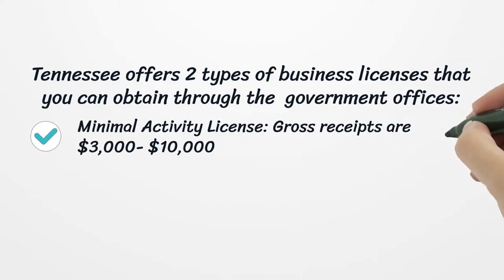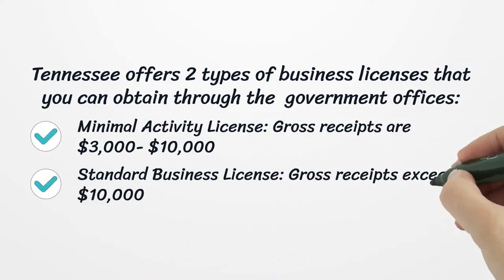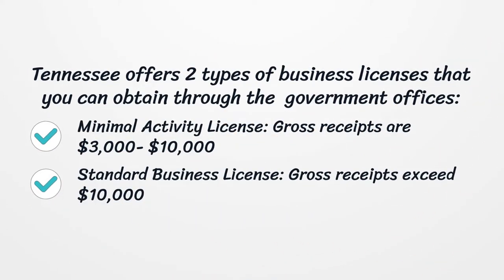Tennessee offers two types of business licenses that you can obtain through the local government offices. The minimal activity license applies when gross receipts are between three thousand and ten thousand dollars. The standard business license applies when gross receipts exceed ten thousand dollars.